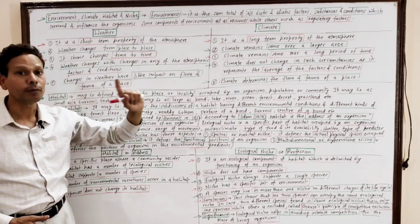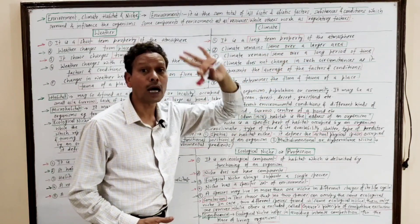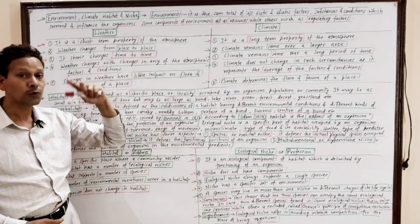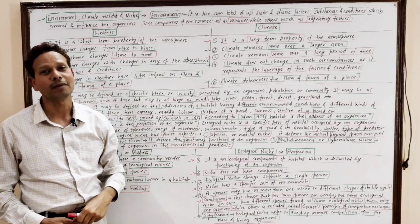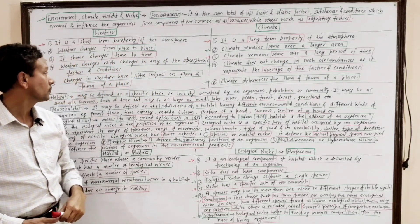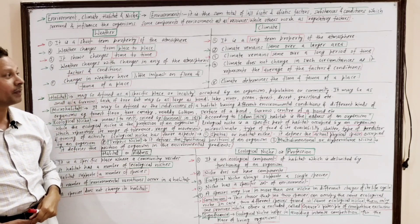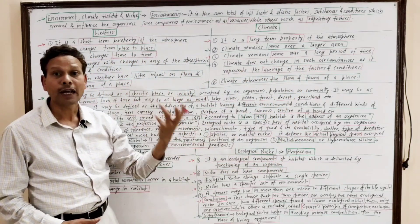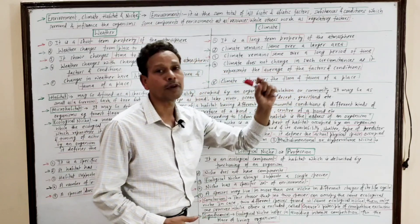Weather changes from place to place, but climate remains constant over a larger area. Weather changes from place to place as well as time to time, but climate remains constant over a long period of time. Weather changes with changes in any atmospheric factors or conditions, but climate doesn't change — it represents the average of those factors and conditions.